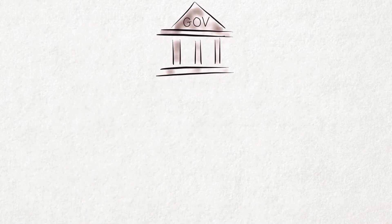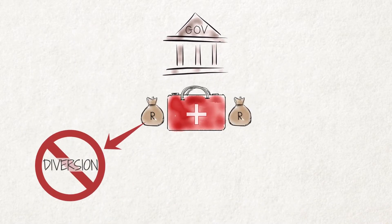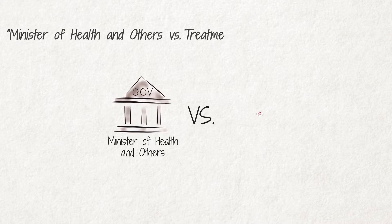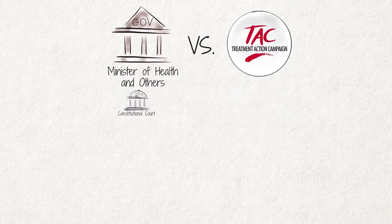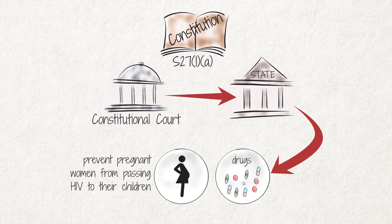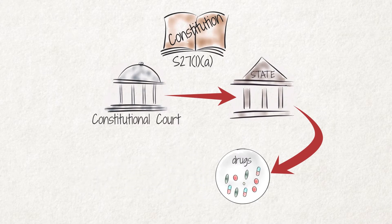This means that the state may not divert money away from health services or waste it on corruption. In the case of Minister of Health and others versus Treatment Action Campaign and others, the Constitutional Court relied on the right to access to health care services and ordered the state to provide medication that could prevent pregnant women from passing HIV onto their newly born children. The court ruled that the state was not allowed to prevent access to the drugs.